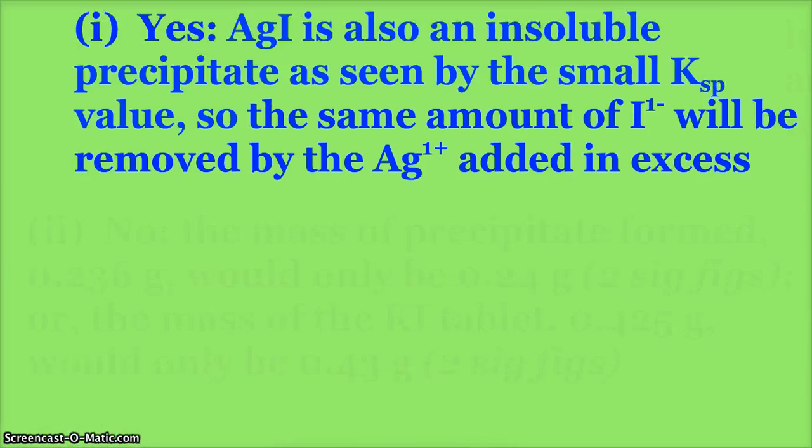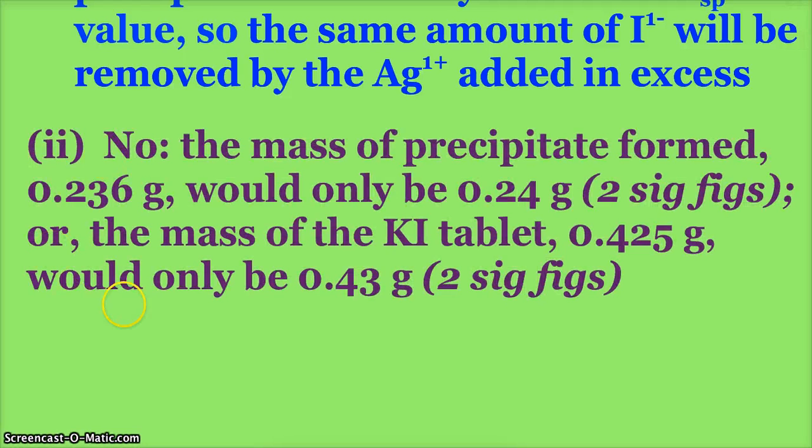There are a couple ways you can justify this. The mass of our precipitate formed, which was 0.236 grams, would now only show up as 0.24 grams—two sig figs. Or look at the mass of the tablet in our data table: the mass of the tablet was 0.425 grams. Now it would only show up as 0.43 grams—only two sig figs. So because of that balance, we would only be able to get an answer to two sig figs.